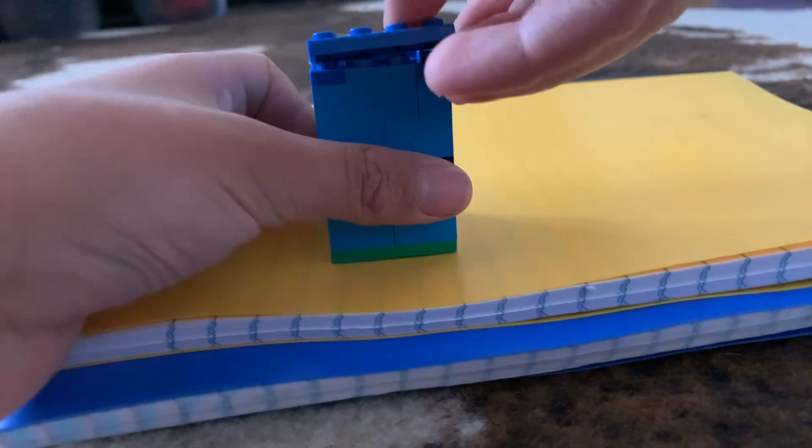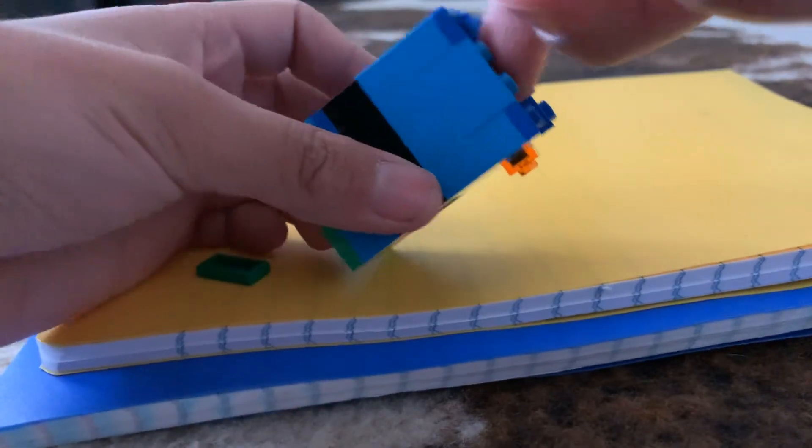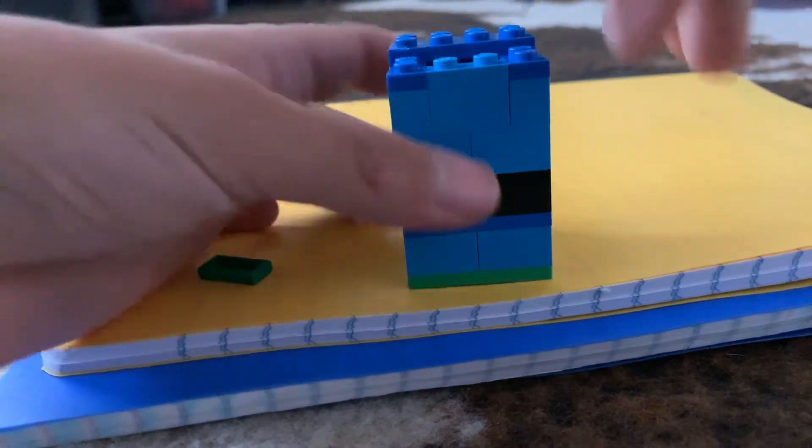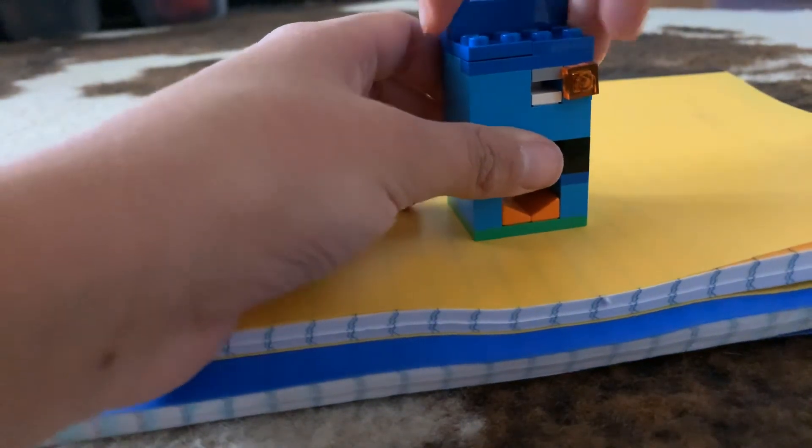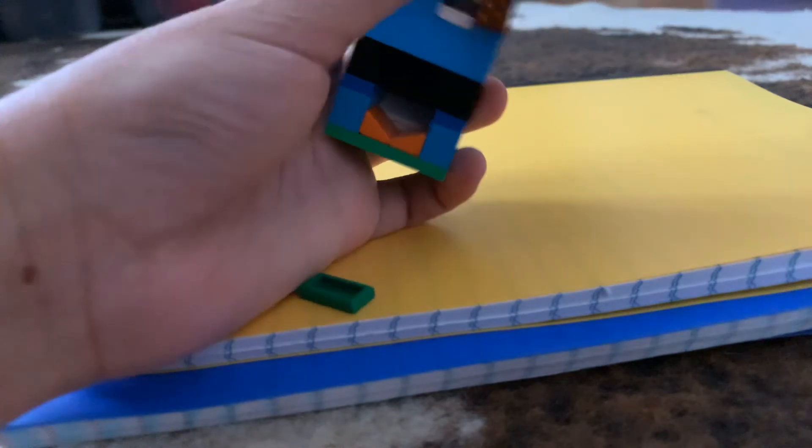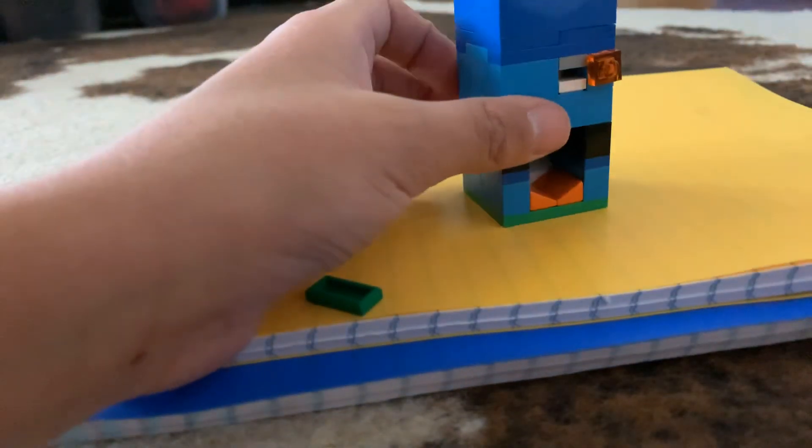And before it clicks on here, it doesn't. So that's why it falls off. Sorry about that. So now you're going to fill the top up with two buffers, and now you have this.